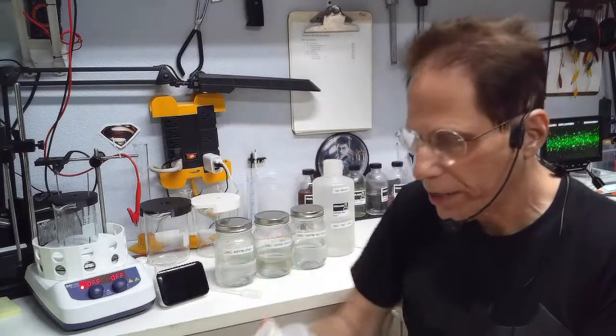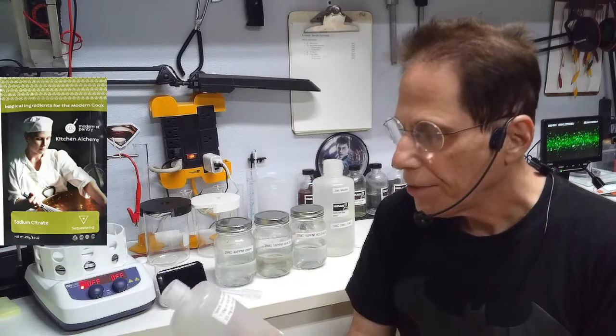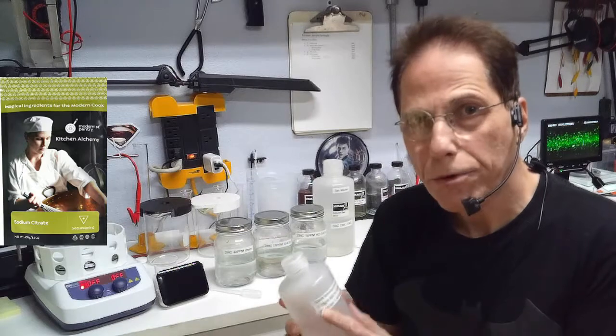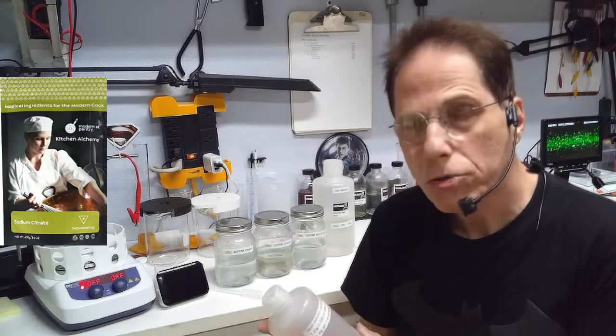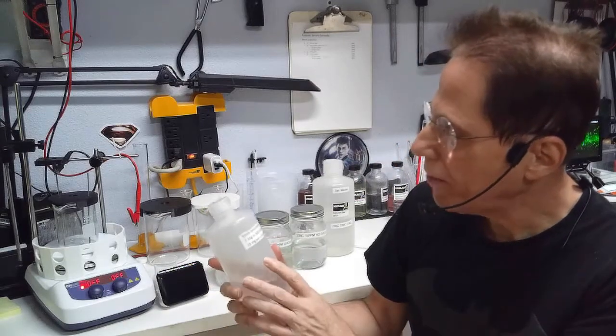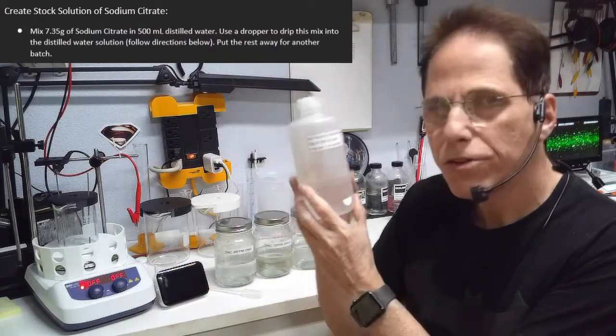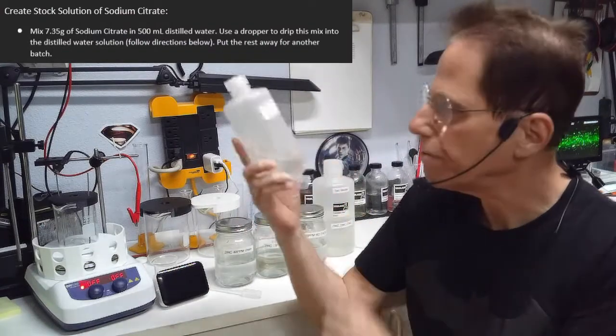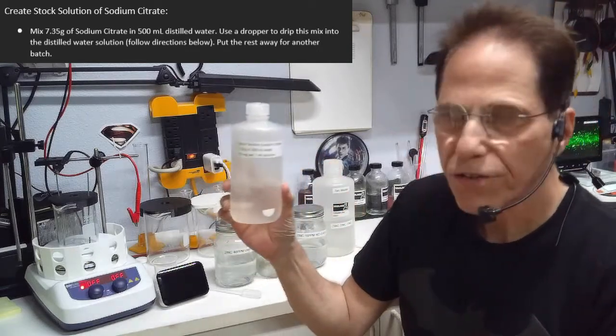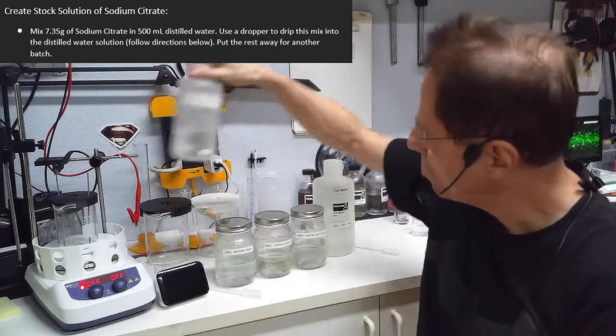We're going to have to create what's called a stock solution using sodium citrate. This stuff isn't going to go to waste, so you'll use it with copper as well and also with gold. You're going to have to mix about 7 grams of sodium citrate in 500 milliliters of distilled water.